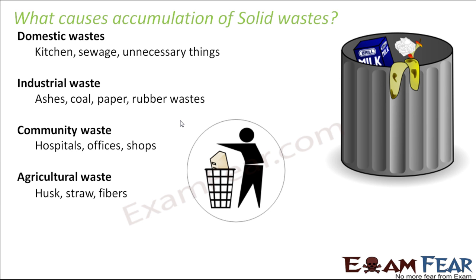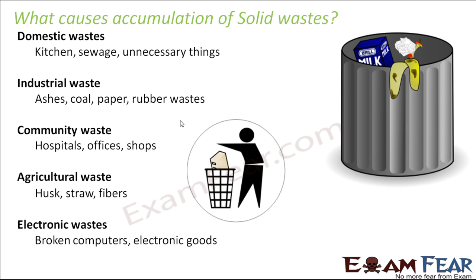Agricultural wastes include husks, straw, and fibers — these are wastes which come from agricultural fields. Finally, there are electronic wastes, such as broken computers, broken phones, or any electronic item which cannot be repaired further. These are thrown out and form electronic wastes, also called e-wastes. These are the various categories of wastes which together form solid wastes.